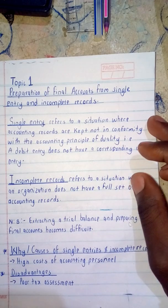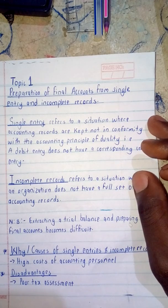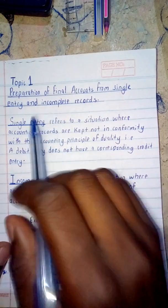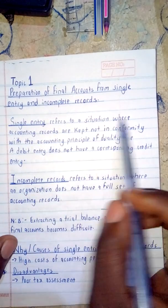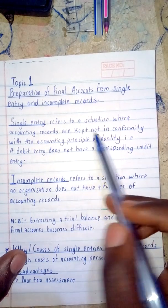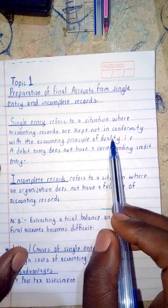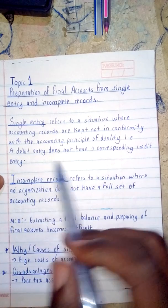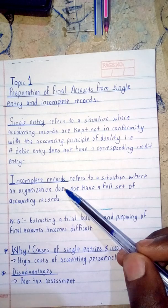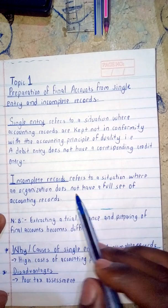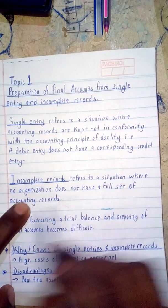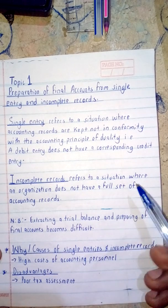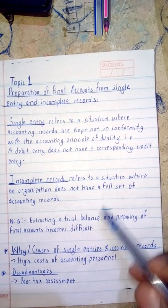Today I'm going to take you through single entry and incomplete records. Single entry refers to a situation where accounting records are kept not in conformity with the accounting principle of double entry — in other words, we have a debit but it does not have a corresponding credit entry. Incomplete records refers to a situation where an organization does not have a full set of accounting records, meaning extracting a trial balance and preparation of financial accounts becomes very difficult.